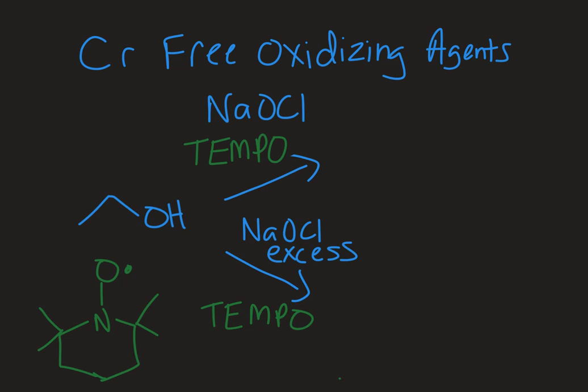In organic chemistry the focus has long been on PCC and chromic acid as oxidizing agents, but in more recent years we've tried to move away from those because chromium is a toxic heavy metal. Especially in large chemical industry, they're going to have to dispose of that — it's expensive, it's bad for the environment, and so we've moved away.